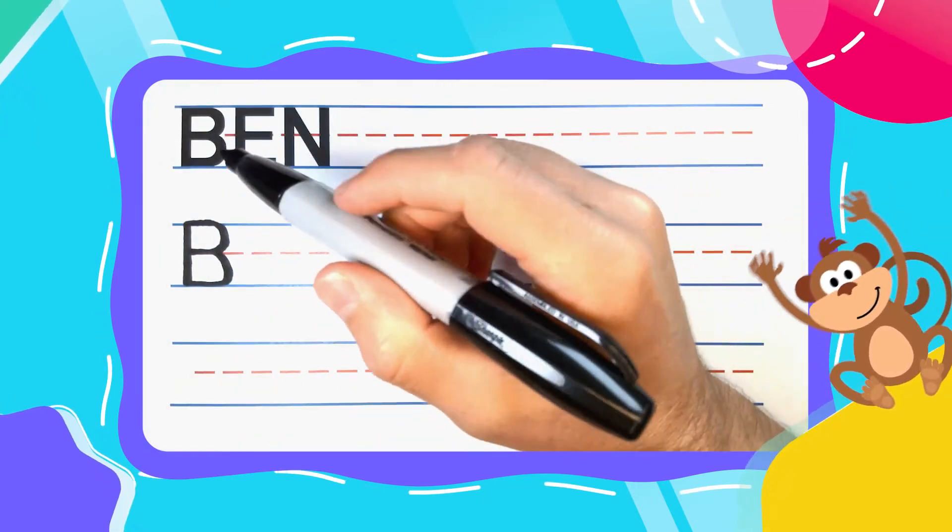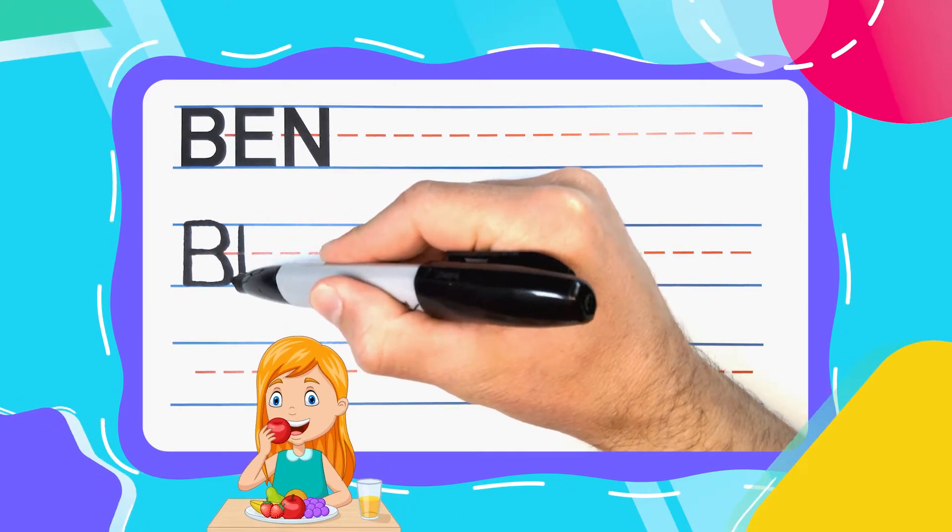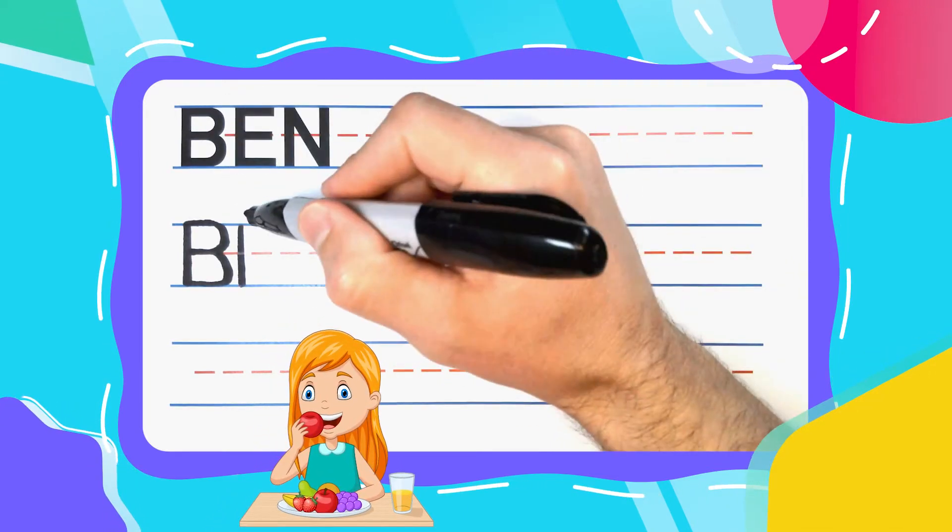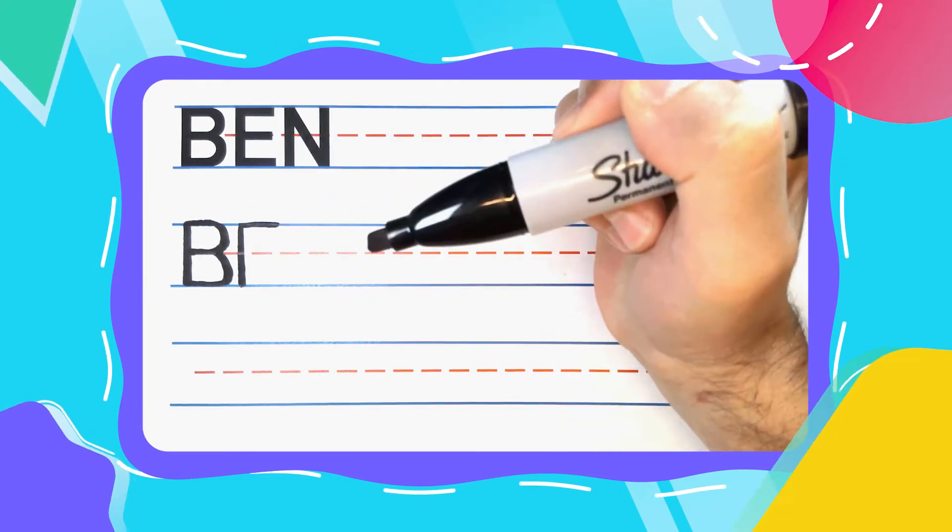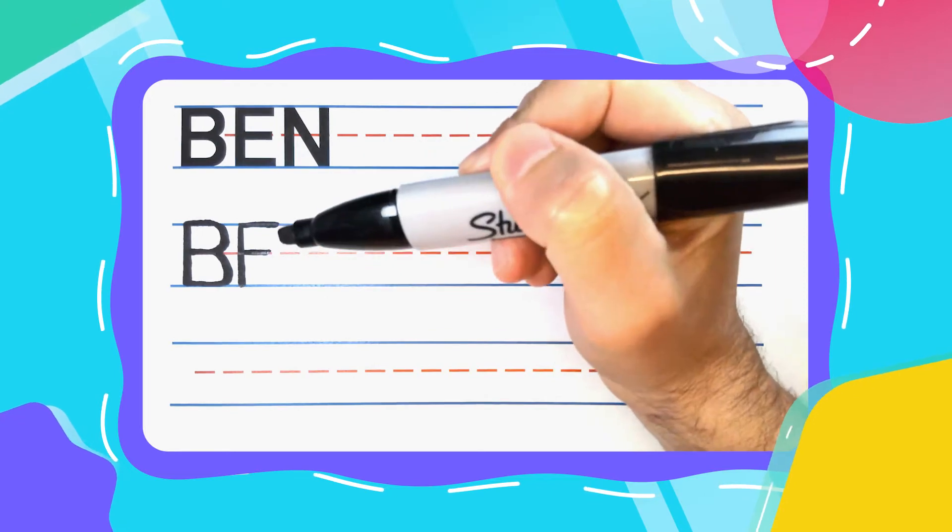The next letter is the eaten E, and every E likes to eat, especially this E. Straight up and down to start, then three left to right lines: a big one at the top, a smaller one in the middle,